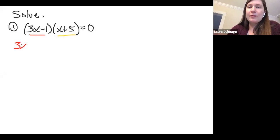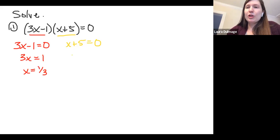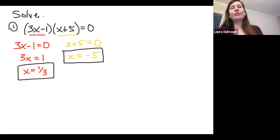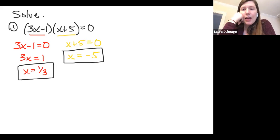If we set this one to zero and then this one to zero, we can solve for our two solutions. So here we'll add one and divide by three. And then over here we'll subtract five. So our two solutions are one-third and negative five. And so that just means that if you put that in your calculator, if you graphed it, this parabola would hit the x-axis at one-third and at negative five. This is a big idea in math, setting it to zero.